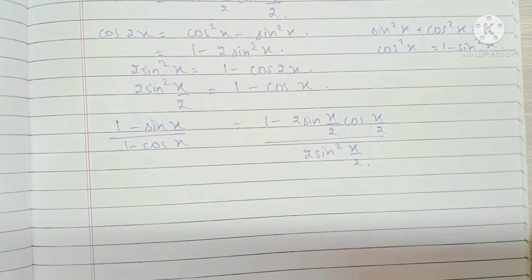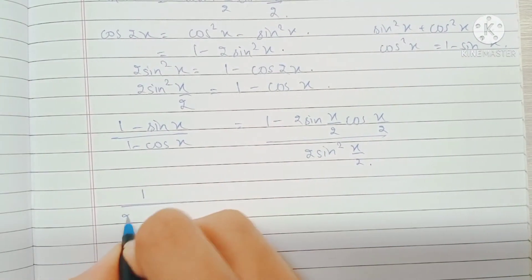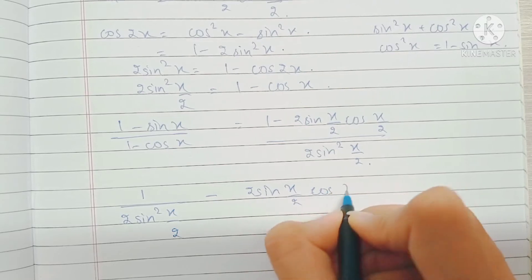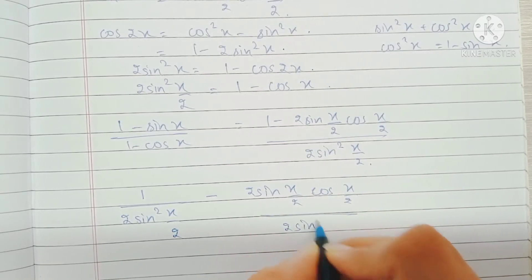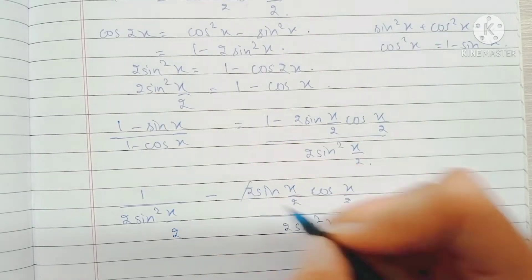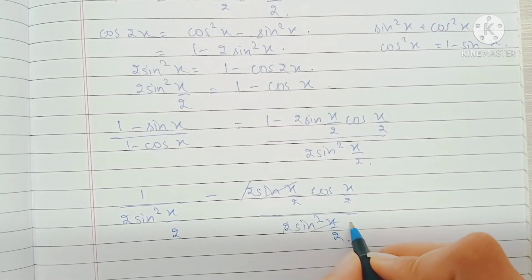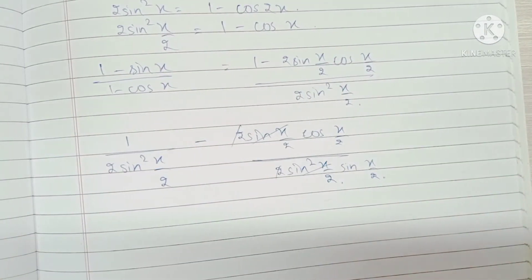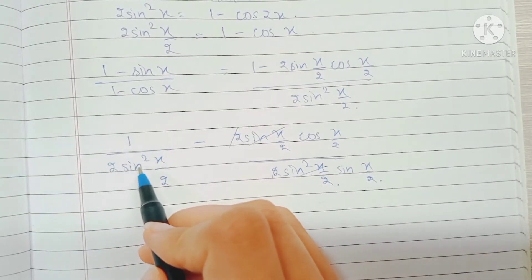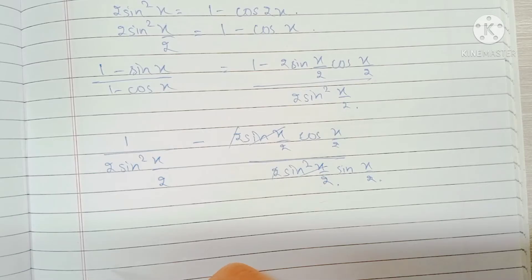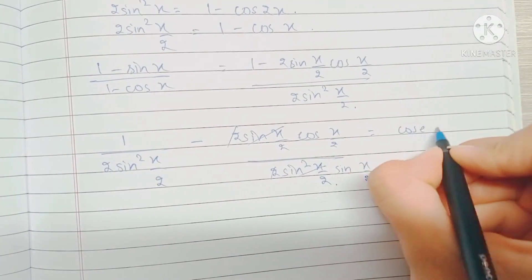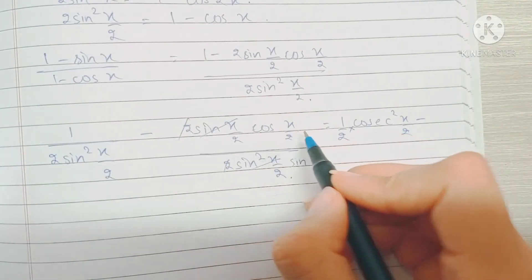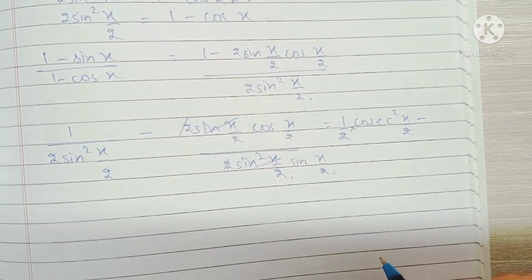Now I'll separate this into two different fractions. We have 1 over 2sin²(x/2), and I'm going to cancel the 2s and one of the sines. We know that 1/sinx is cosecx, so 1 over sin²(x/2) is cosec²(x/2). This becomes cosec²(x/2) times (1/2), minus cos(x/2) over sin(x/2), which becomes cot(x/2).